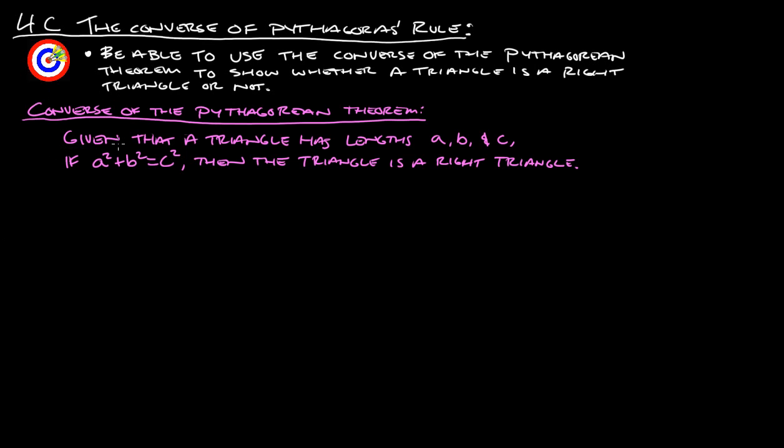Meaning that if you have a triangle and it gives you all three sides, then you use the Pythagorean theorem to check and see if it is a right triangle. So if you have the three lengths, plug it into a squared plus b squared and make sure that it equals c squared, and if so, then that means it's a right triangle.